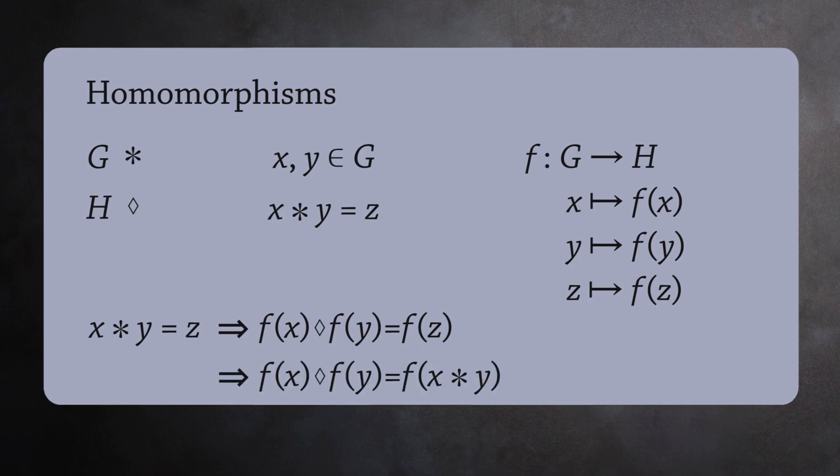Substituting this gives us f(x) times f(y) equals f(x times y). This is a definition of a homomorphism. It's a simple definition, but it captures a big idea. A way to compare two groups.